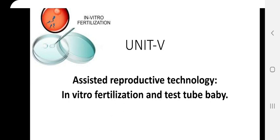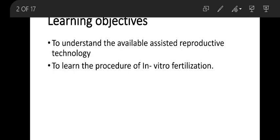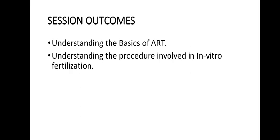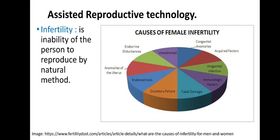Hello everyone. We are going to see one more topic in Unit 5: Assisted Reproductive Technology — specifically in vitro fertilization and test tube babies. Before going into the topic, let's see the learning objectives: to understand the available assisted reproductive technologies and to learn the procedure of in vitro fertilization. By the end of the class, you will understand the basics of ART and the procedure involved in IVF.